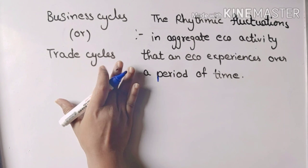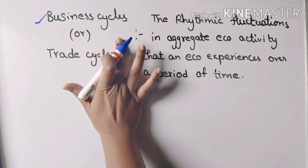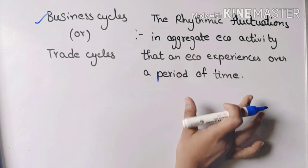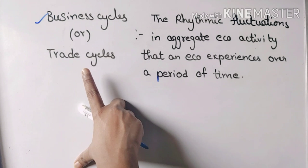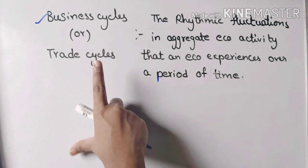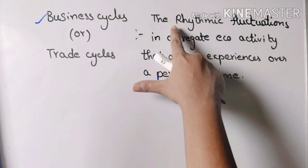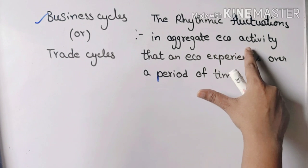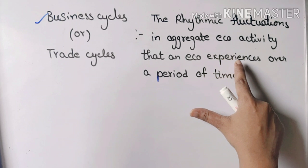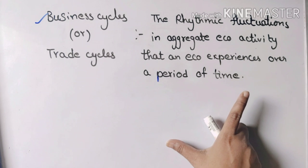My main definition here is business cycles. This business cycle definition is also called trade cycles. The definition is: the rhythmic fluctuations in aggregate economic activity that an economy experiences over a period of time.